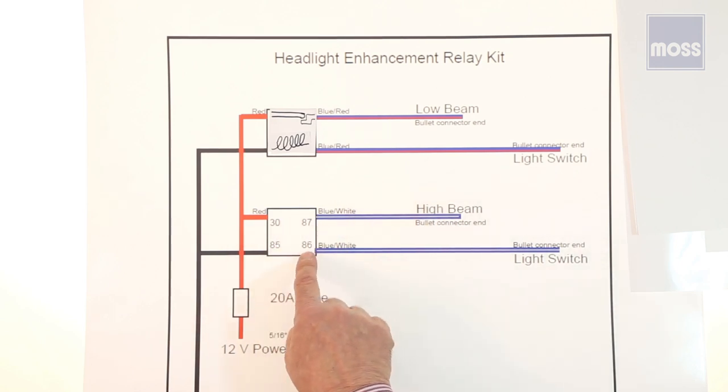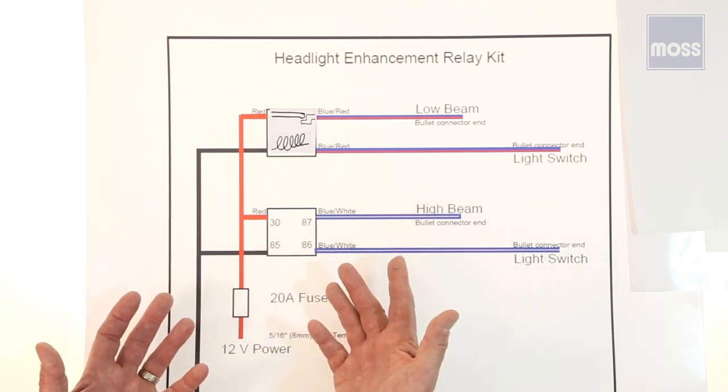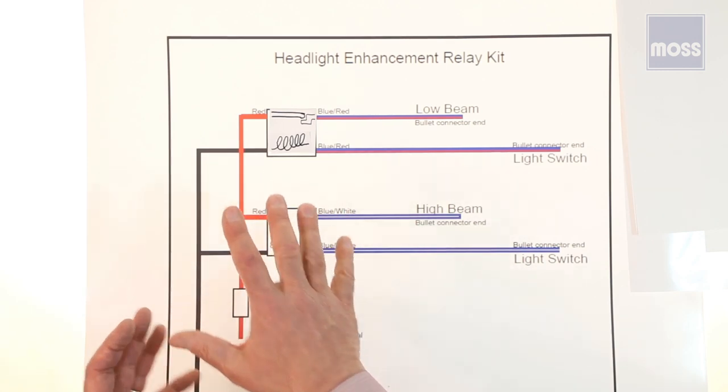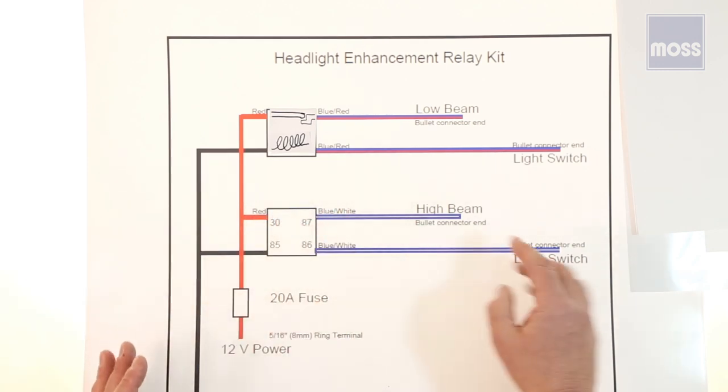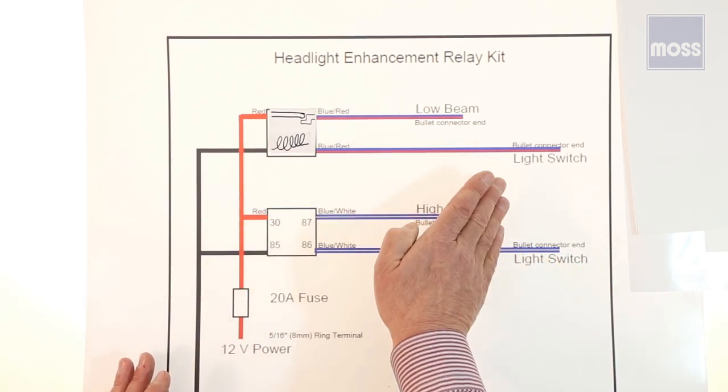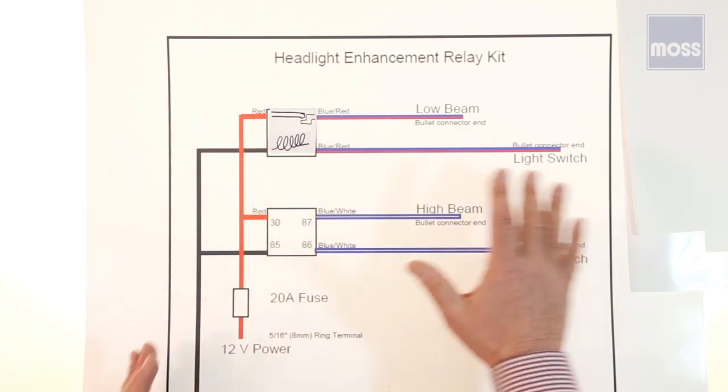We can do this. It's not hard to do. And when this is done, what's going to happen is from now on it's going to function the way that we want it to with crisp, bright lights. Sometimes here at Moss we'll get a call and somebody will say, I put a headlight relay kit in.